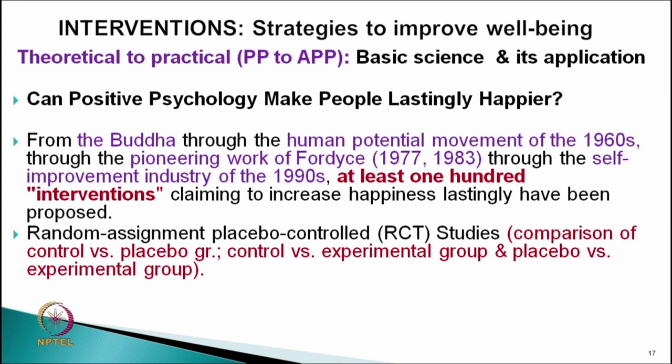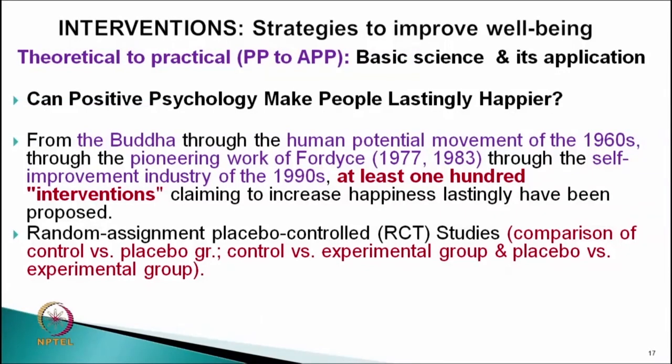Can positive psychology make people lastingly happier? There are a number of intervention programs, and even before positive psychology there were various scholars who worked in this direction. From Buddhism through the human potential movement of the 1960s, through the pioneer work of researchers in the early 20th century, and through the self-improvement industry of the 1990s, at least 100 interventions claiming to increase happiness lastingly have been proposed. When studying effectiveness of such intervention programs, as discussed in chapter 3, random assignment placebo-controlled research is used.